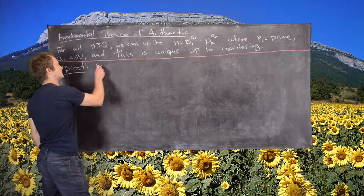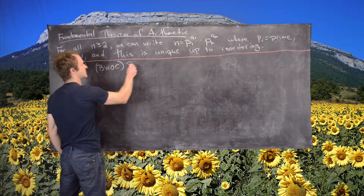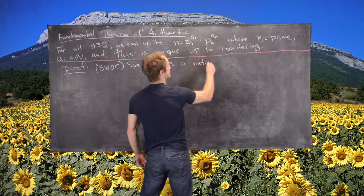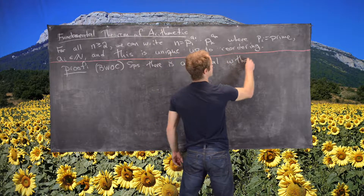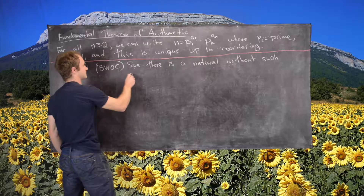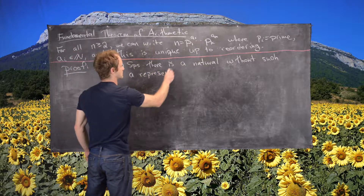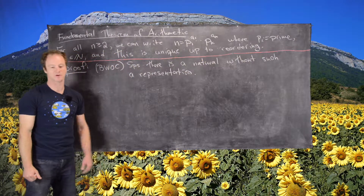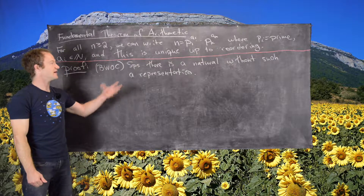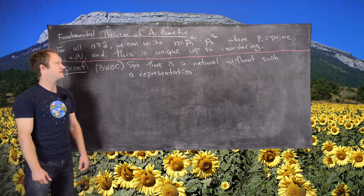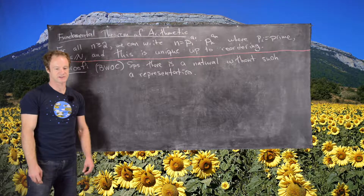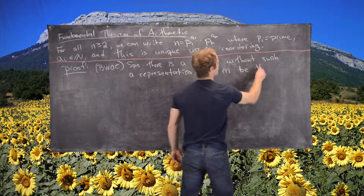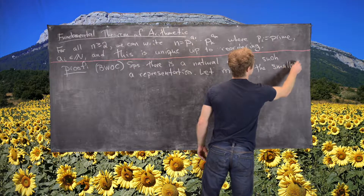We'll do that by way of contradiction. Suppose there is a natural number without such a representation — without a representation as a product of powers of primes. If there is a natural number without such a representation, there is a smallest natural number without such a representation. So let m be the smallest such number.